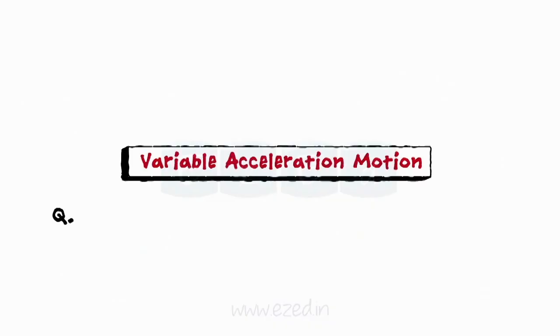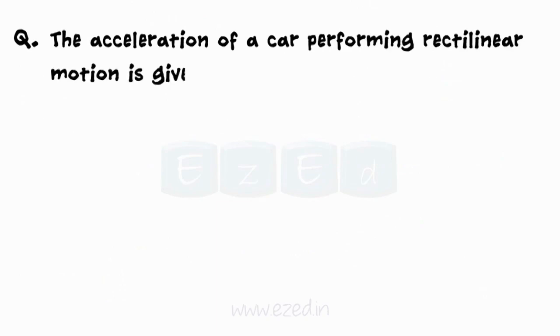Let us solve problems on variable acceleration. The acceleration of a car performing rectilinear motion is given by a = -0.06v² m/s².